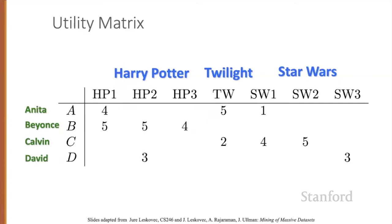Here's an example utility matrix representing ratings from users Anita, Beyonce, Calvin, and David of movies on a one-to-five scale with five the highest rating. Blanks represent the situation where the user has not rated the movie. The movie names are Harry Potter 1-2-3, Twilight, and Star Wars 1-2-3. The goal of a recommendation system is to predict the blanks in the utility matrix — for example, would Anita like Star Wars 2?